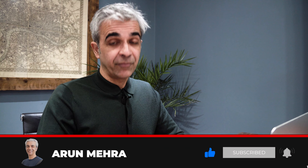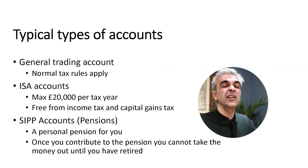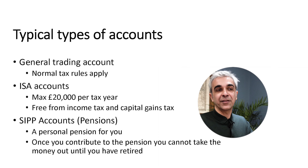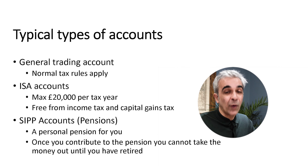The third option is a SIPP — a Self-Invested Personal Pension. If you put money into this pension and it grows through investing, that money is tax-free as well. However, when you put something into a pension, you can only access that money when you retire. So the three account types are: a general account, an ISA account, and a SIPP. Most likely you'll start with a general account or an ISA, and maybe look at a SIPP a little further down the line once you have more experience.